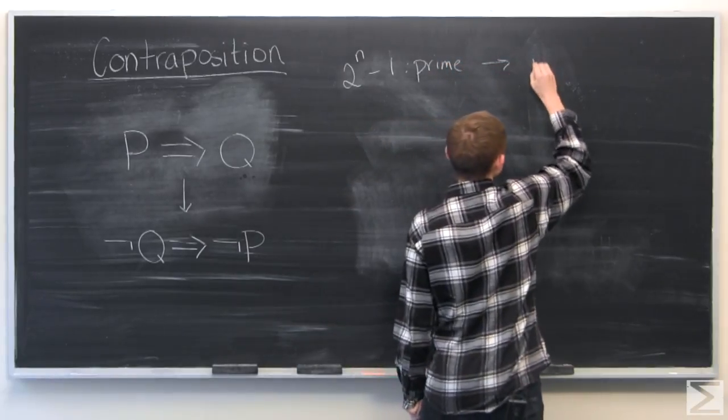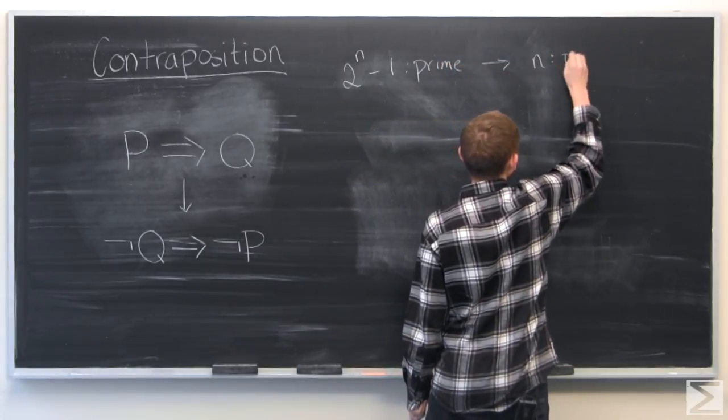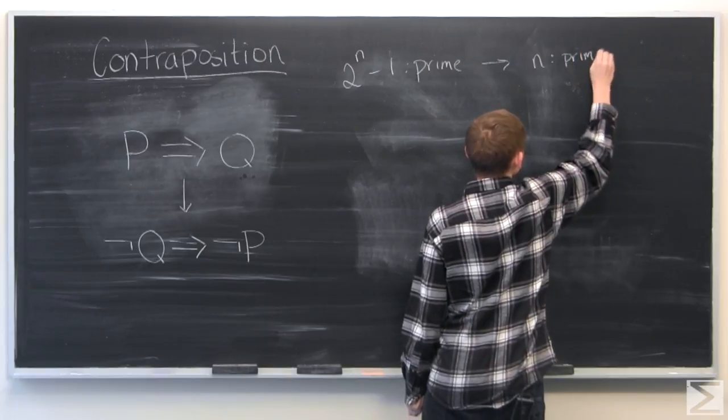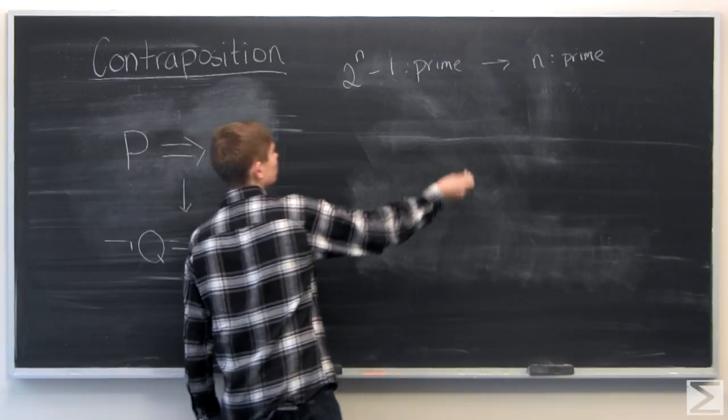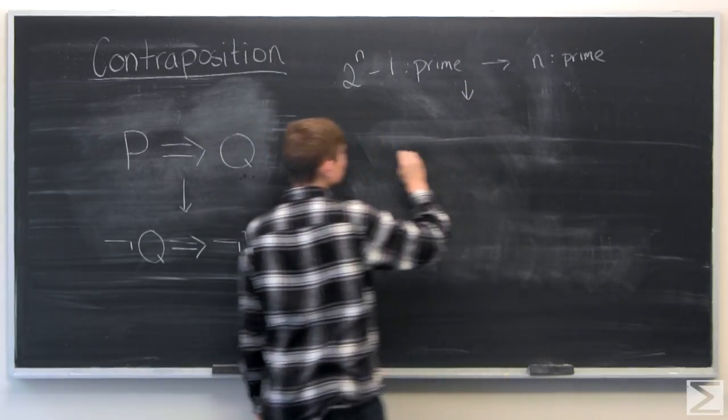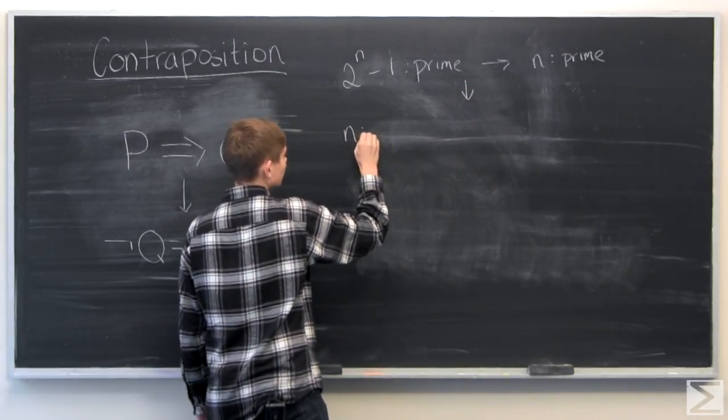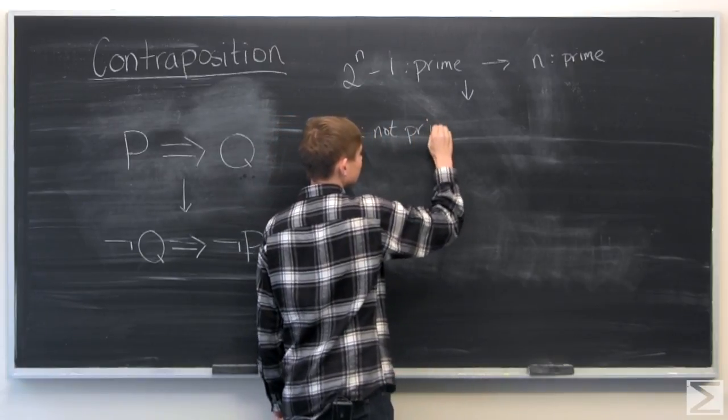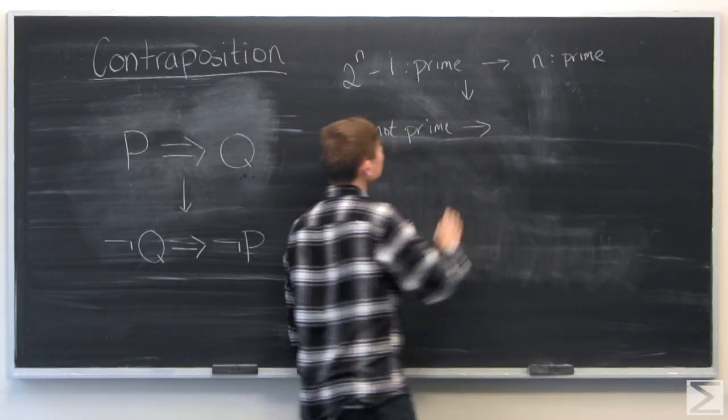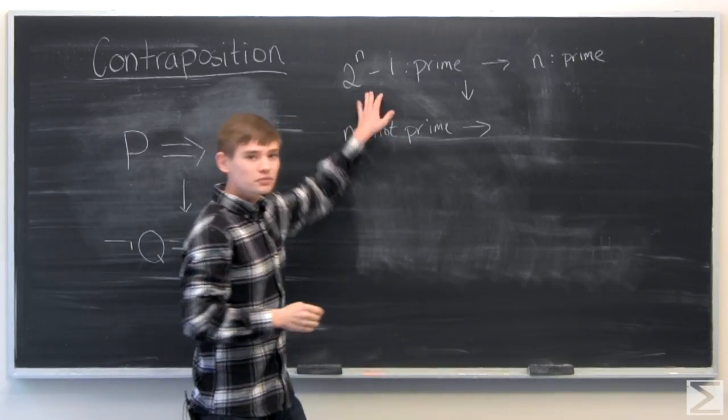And therefore, since we're using contraposition, we want to show that if n is not prime, this will mean that 2 to the n minus 1 is not prime.